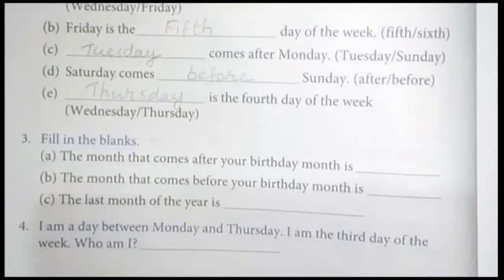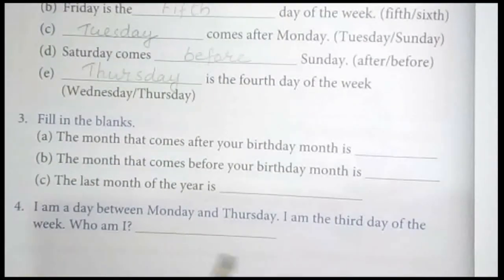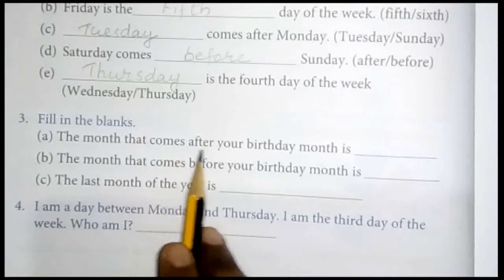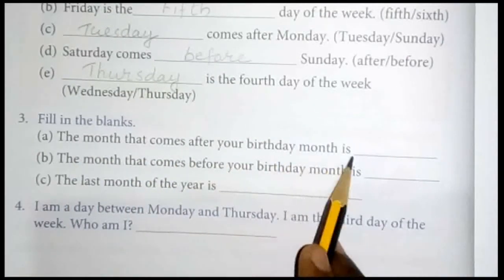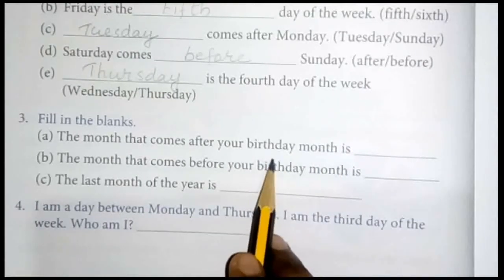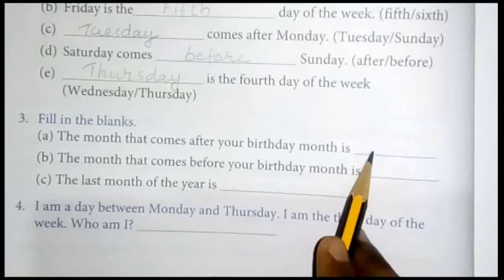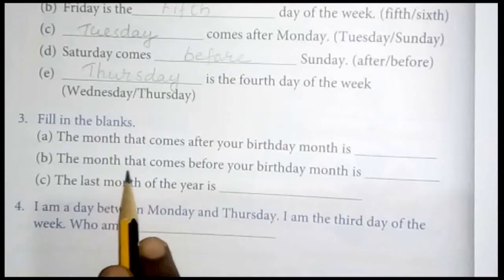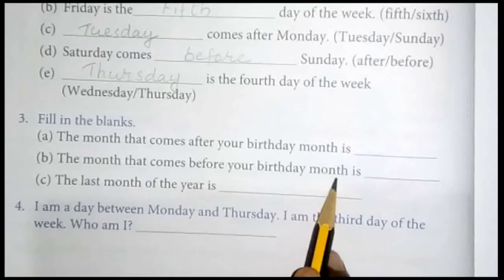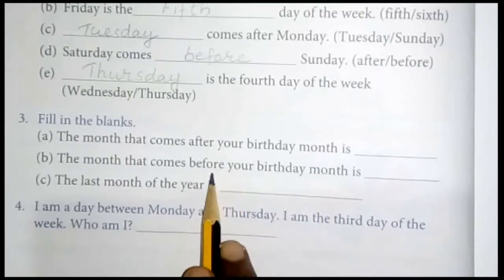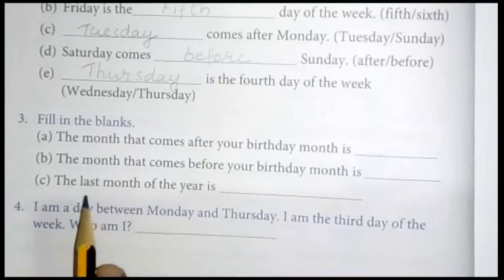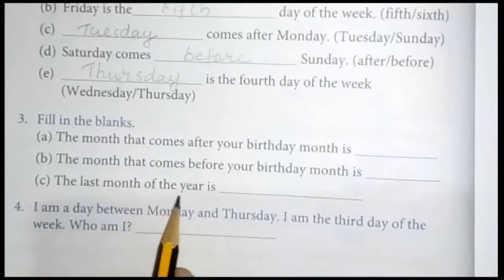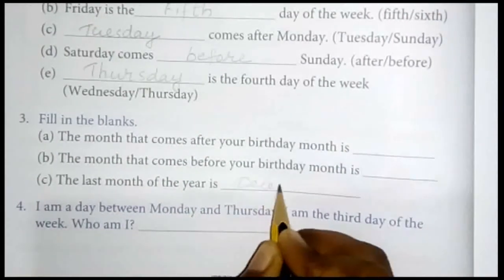Now third question: fill in the blanks. The month that comes after your birthday month — you know your birthday month. The month that comes before your birthday month. Next: the last month of the year is dash. The last month is December.